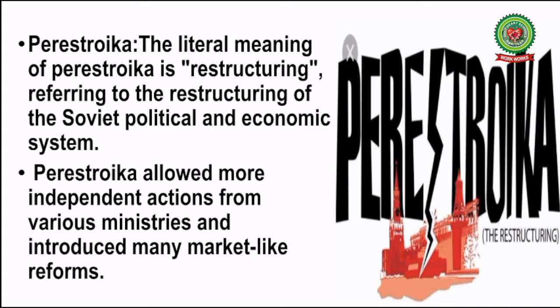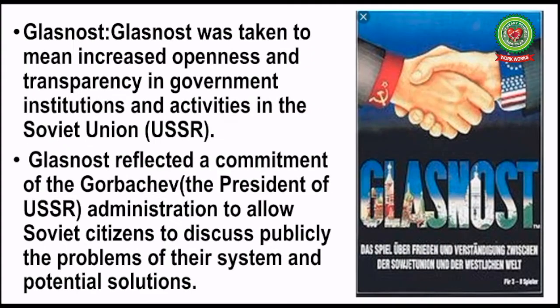The next term is 'Perestroika.' The literal meaning of Perestroika is restructuring, referring to the restructuring of the Soviet political and economic system. Perestroika allowed more independent actions from various ministries and introduced many market-like reforms. When Mikhail Gorbachev became the president of USSR, he started the policy of Perestroika, according to which reforms were introduced in the political as well as economic system of USSR. In summary, Perestroika means reforms and the opening of the social and political system of USSR.